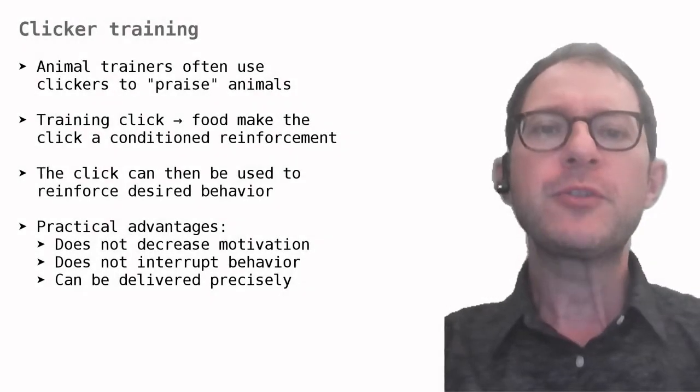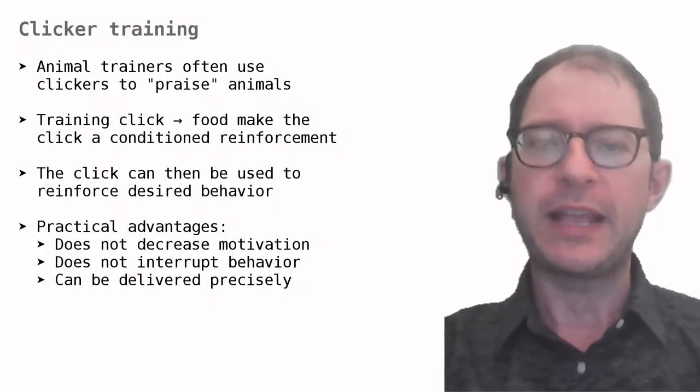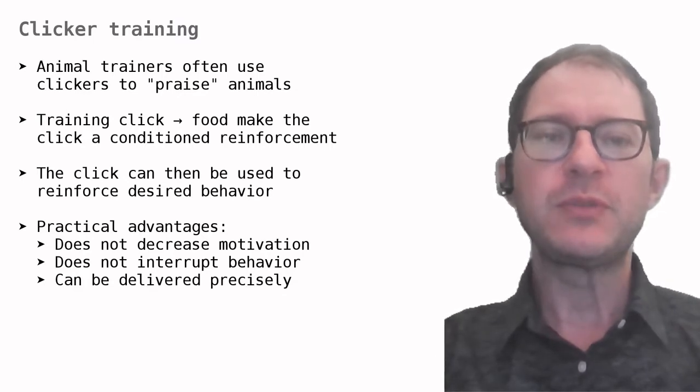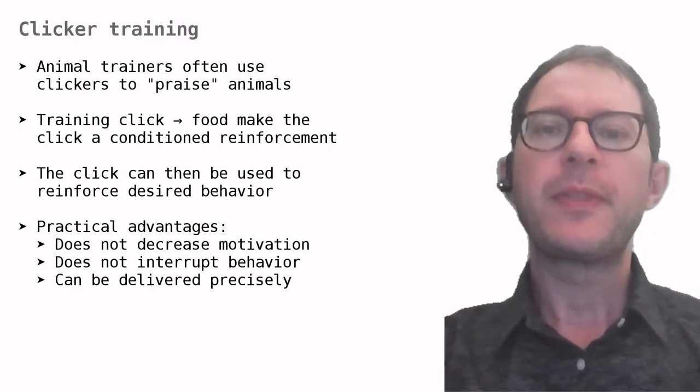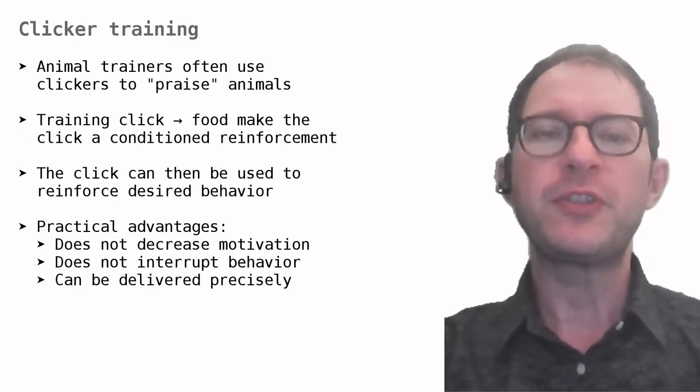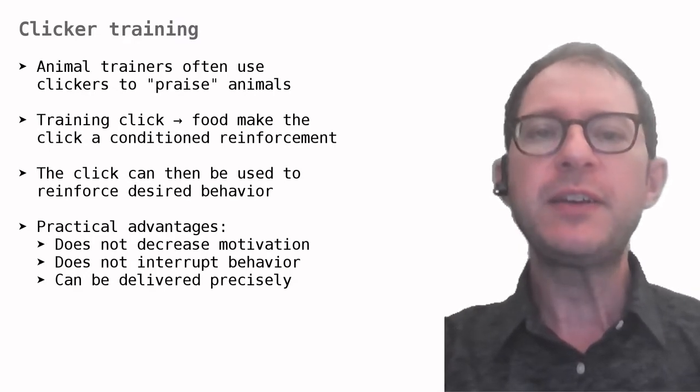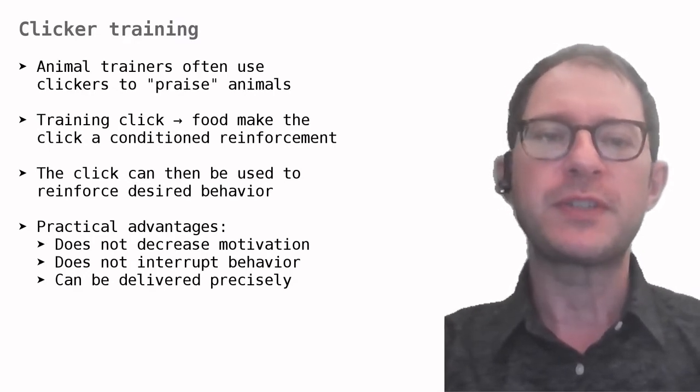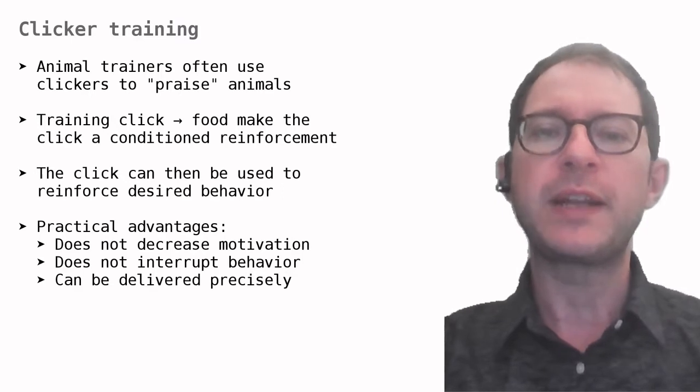The video showed a cat owner training her cat to perform various actions. In every case, she used both food treats and a clicker to reward behavior. The way it works is that the cat hears the clicker right before she receives the treat. In this way, the clicker becomes a conditioned reinforcer and can then be used to reward the correct action.